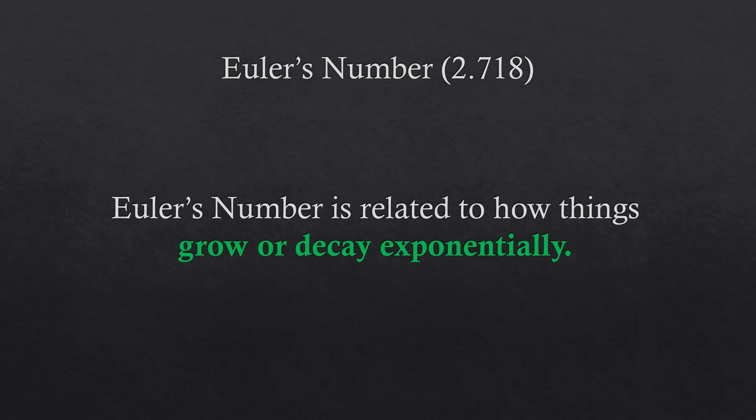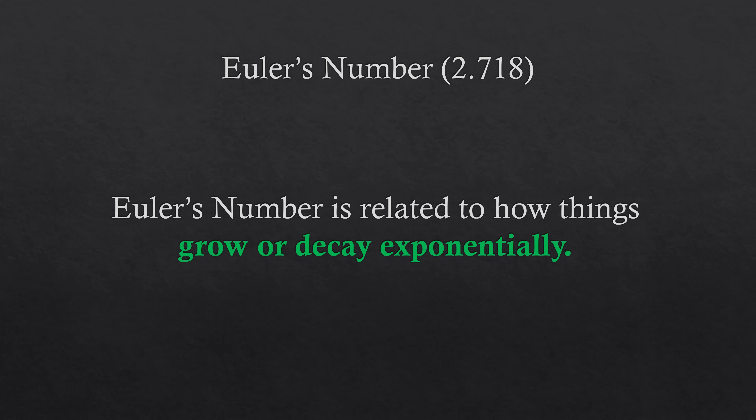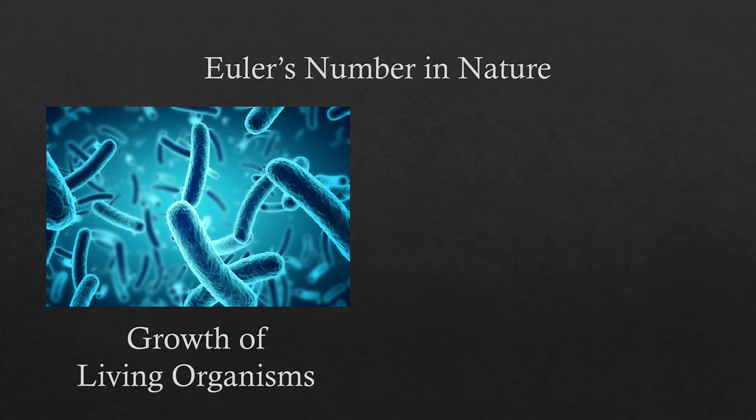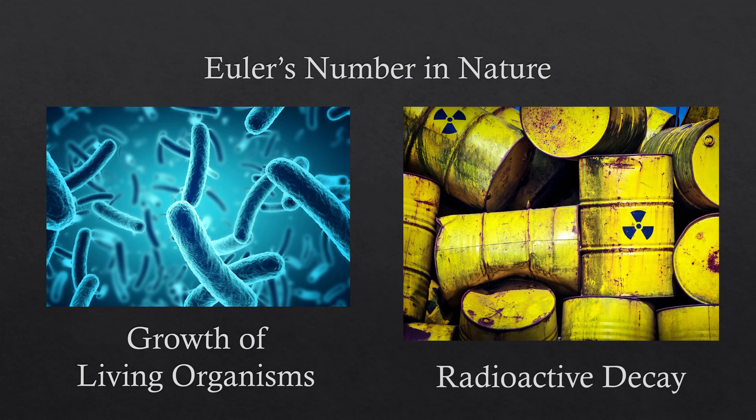Two famous examples of Euler's number in nature are the rate of population growth in living organisms and the radioactive decay of heavy elements like uranium. The point here is that Euler's number can be found in many different places in the same way the Fibonacci ratios can — that's a property of mathematical constants.